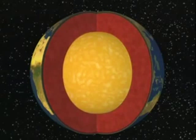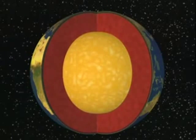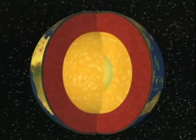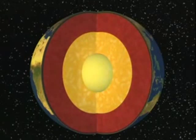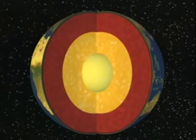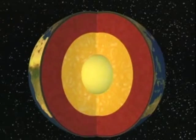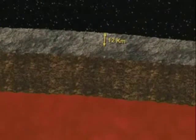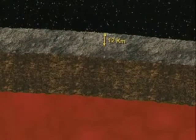Peel back the crust and there's a solid mantle. Under the hard mantle, there's a very hot liquid core. At the center, we find the inner core, which is solid — a remarkable discovery considering we've only drilled 12 kilometers into the crust.